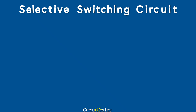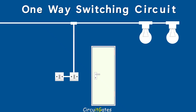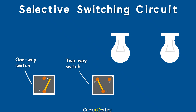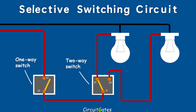We have another light switching circuit called the selective switching circuit, which makes it easy to provide two levels of lighting in certain circumstances. A selective switching circuit consists of a one-way switch and a two-way switch. The live wire from the supply is connected to the one-way switch, then goes to the common terminal of the two-way switch. One lamp is connected to terminal L1 of the two-way switch, and the other lamp is connected to terminal L2. When the one-way switch is off, none of the lamps are illuminated. When it is on, one lamp will illuminate depending on the position of the selector of the two-way switch.